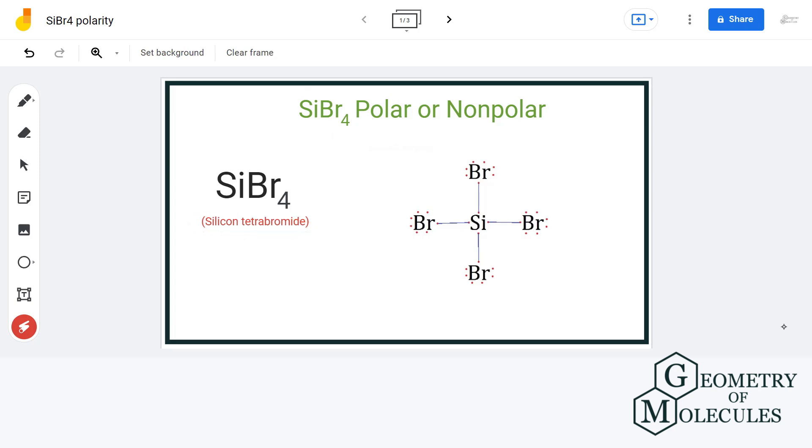And to understand its polarity, we will first look at its Lewis structure, followed by the electronegativity values of each atom, and then we will draw a conclusion by looking at its molecular geometry.